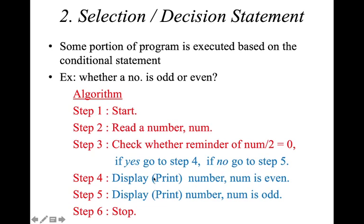There is an error in the initial version of this algorithm. After printing 'number is even' in Step 4, the algorithm would fall through to Step 5 and also print 'number is odd'. To fix this, Step 4 must include 'go to Step 6' after printing 'number is even', so execution jumps directly to Stop and does not execute Step 5.